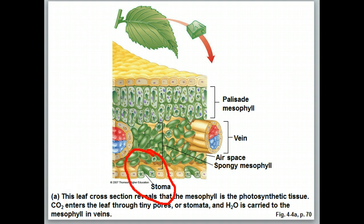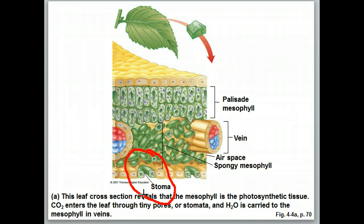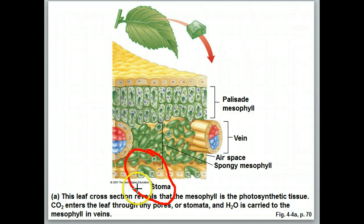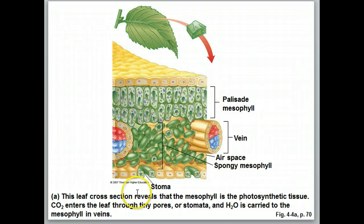The stomata are open during the day, which allows carbon dioxide to enter and also allows water vapor to be lost from the leaf, providing evaporative cooling. In order to keep those guard cells inflated and the stoma open, there must be an abundance of water — the guard cells are inflated with water. Under hot, dry conditions the guard cells collapse and close the stomata, which reduces water loss but also cuts off the supply of carbon dioxide coming into the plant.